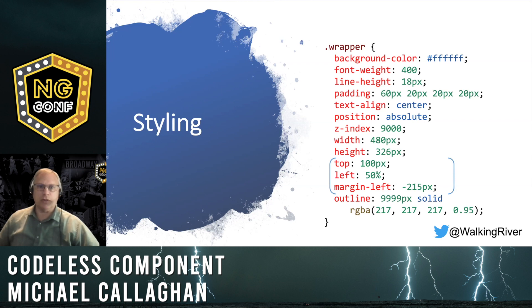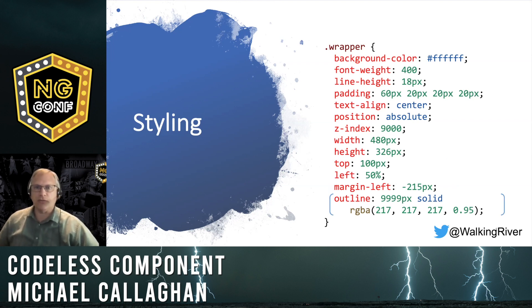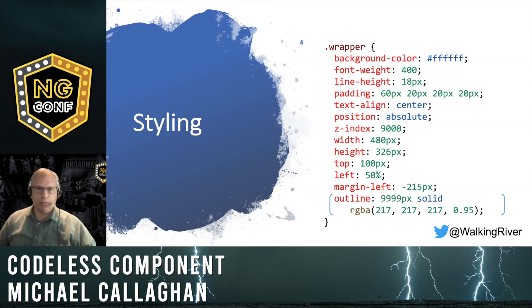And the last block is really cool. The component's outline is defined as a 95% opaque solid gray line, really really wide. This ends up becoming the overlay covering the host component with its outline, so you can't select anything behind it.